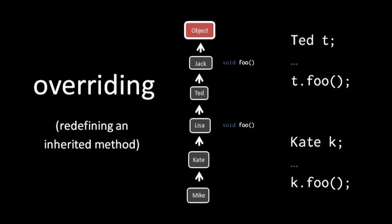Recall that at the beginning I said Java is mostly a static language but with some elements of dynamicism. This is what I was talking about — this is an example of runtime polymorphism. When we invoke a method, the actual method being invoked can depend upon the actual type of the object, and the actual type isn't determined until runtime. The fact that Java allows us to assign different types to a reference is itself an element of dynamicism — so Java isn't entirely static.